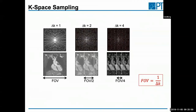During the last talks you've often heard people speaking about how, even when doing undersampling, you can still get good images — this is usually referred to as parallel imaging, which we are going to discuss now.